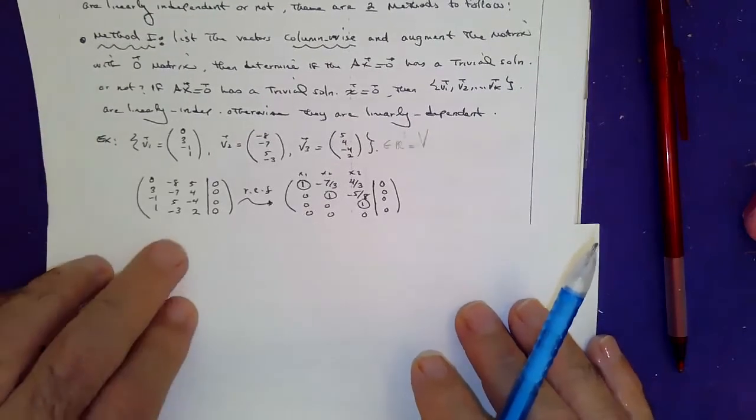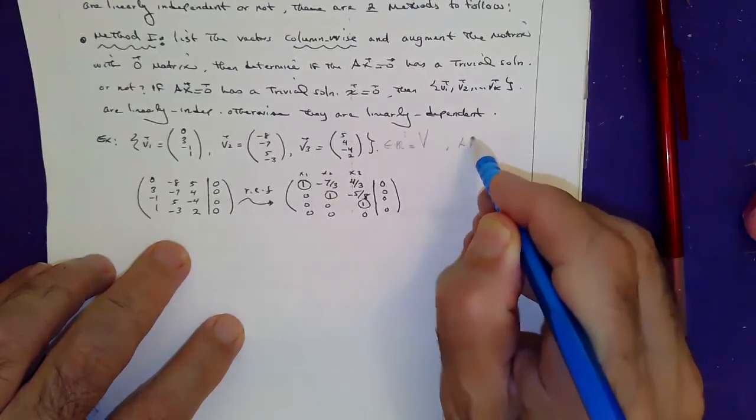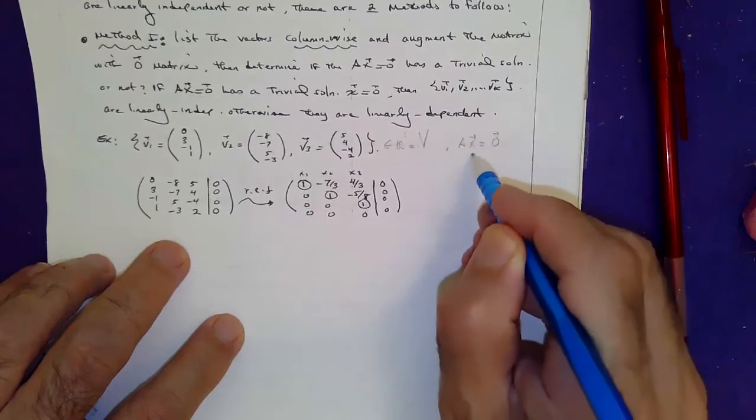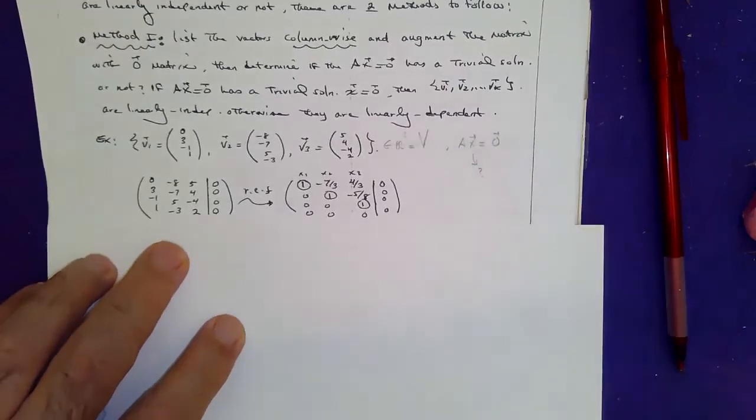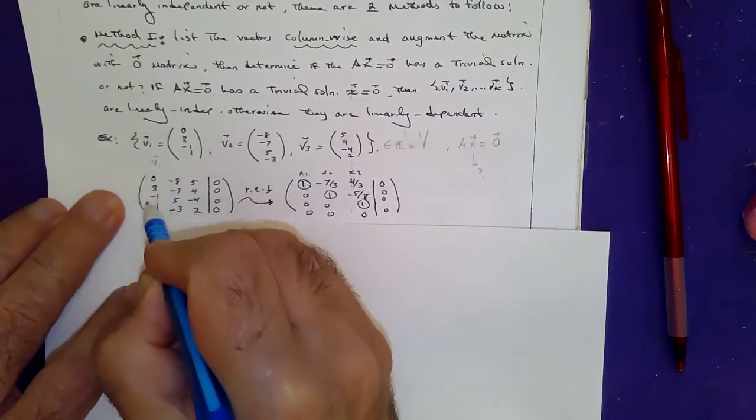You form an augmented matrix. In other words, try to solve this homogeneous system of equation for x. So what you do, you list vector V1 in the first column.